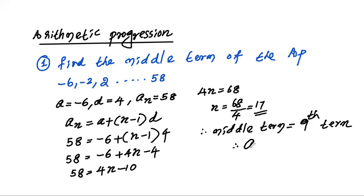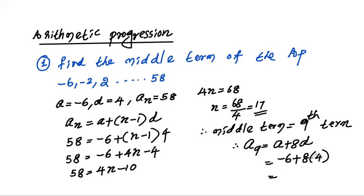So the 9th term is given by A9 equals A plus 8D. A is minus 6 plus 8 into D which is 4. That is 32 minus 6, equal to 26. So the 9th term is the middle term, equal to 26, because there are 17 terms in total.